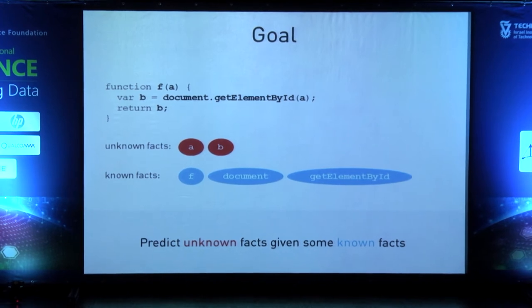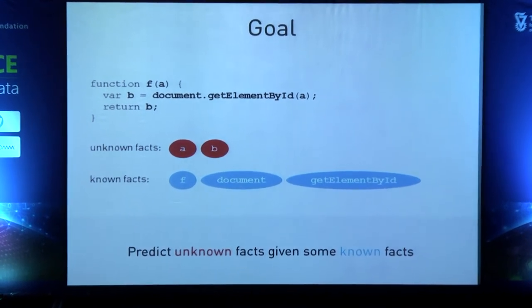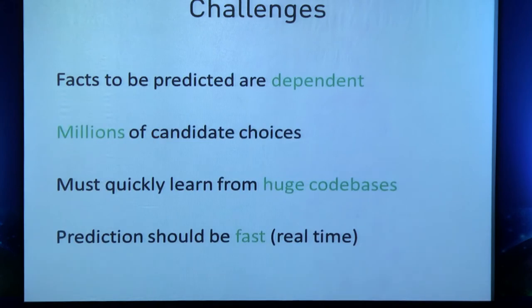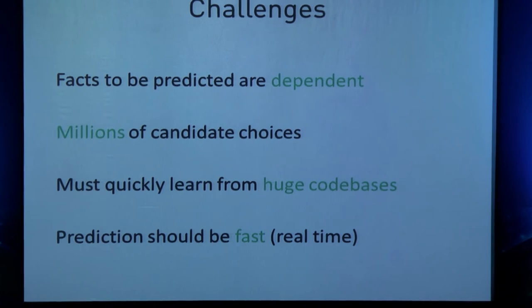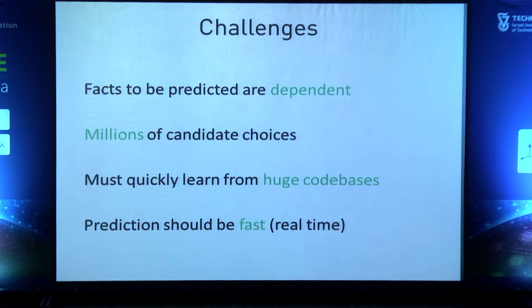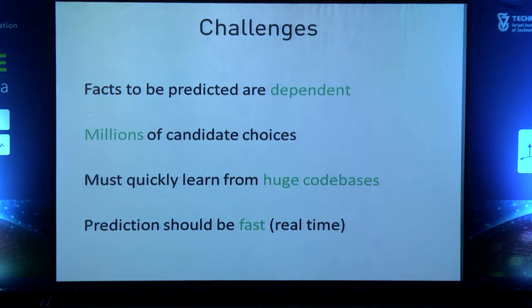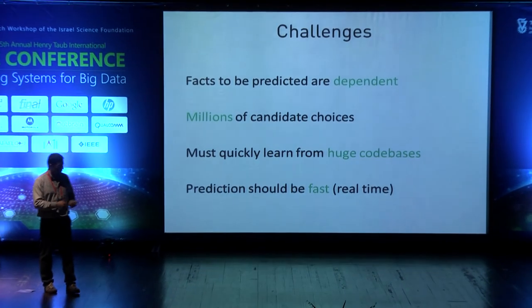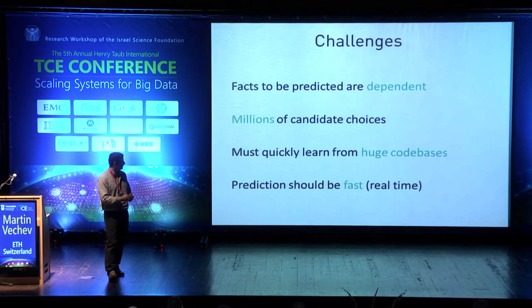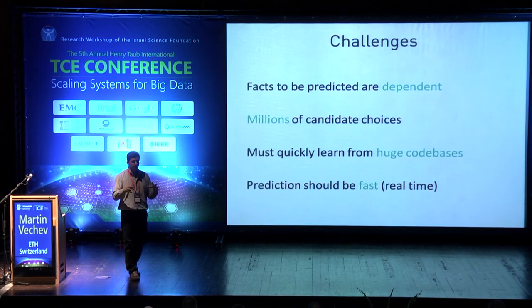Why is it difficult to predict many things about a program — be it names, predicting new code, or predicting a natural language description? Here are four challenges. First, predictions are usually dependent on one another — there is a dependence between the predictions, like pixels in an image. Second, there are usually many choices — if I want to predict names of variables, there may be millions of possible choices. Third, you must be able to quickly learn from huge code bases — JS Nice learns its entire model over GitHub in about two hours. Fourth, the prediction should be fast, basically instantaneous if you want it to be useful.